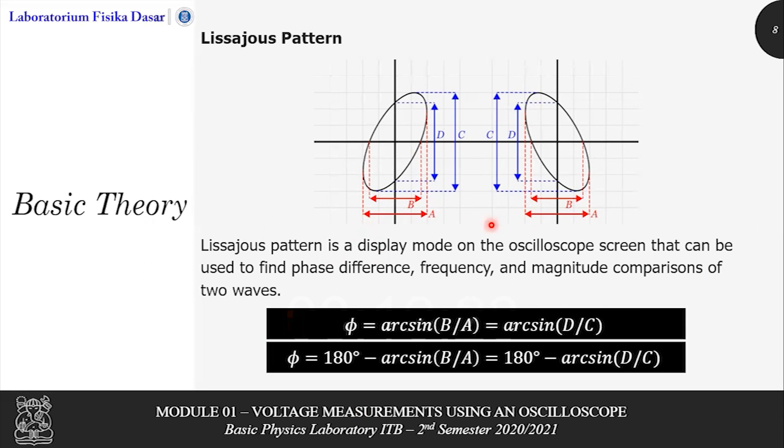As you can see, there are a, b, c, and d. A and b represent the distance between two points on the Lissajous pattern that cross the x-axis, while d is the distance between two points on the Lissajous pattern that cross the y-axis.